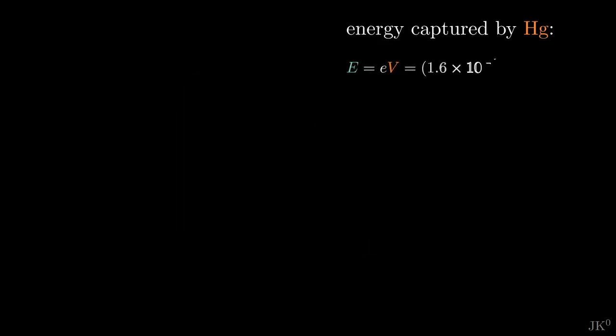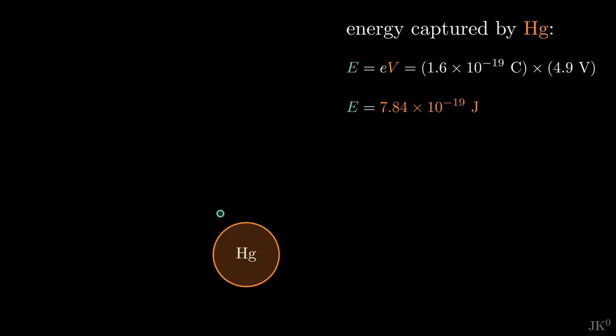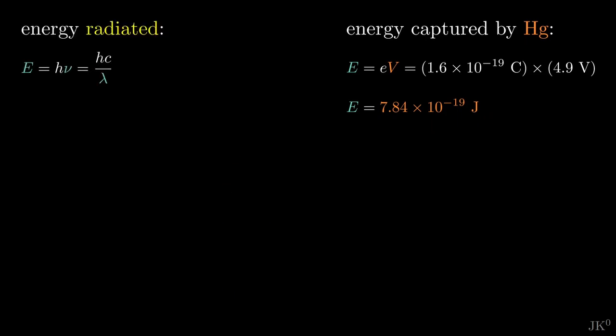The energy of an electron accelerated by 4.9 volts is 7.8 times 10 to the minus 19 joules. This is the energy that the mercury atom receives. If this energy is then given off by the atom in the form of radiation, we can estimate its wavelength using Einstein's formula, E equals h nu, or hc divided by lambda. Solving for the wavelength, we get lambda equals hc divided by the energy.